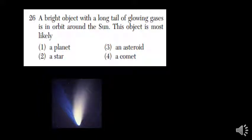A bright object with a long tail of glowing gases is in orbit around the sun. The object is most likely... Well, we're talking about this object right here. It's got a long tail to it.